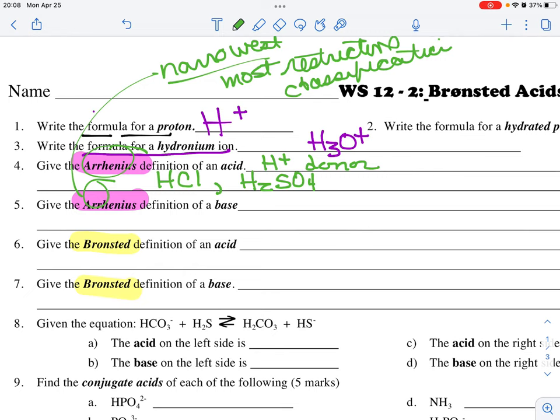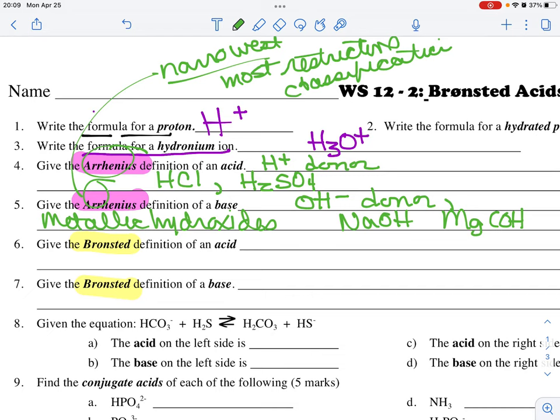The Arrhenius definition of a base is an OH- donor. So it's restricted to metallic hydroxides. Examples would be sodium hydroxide or perhaps magnesium hydroxide.